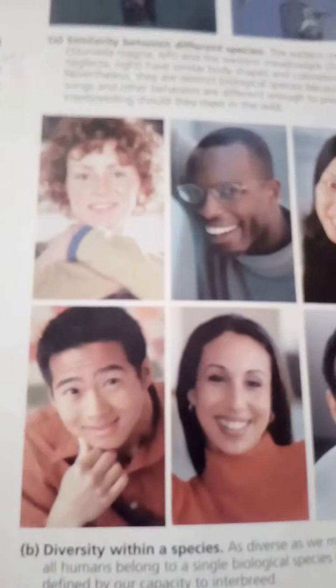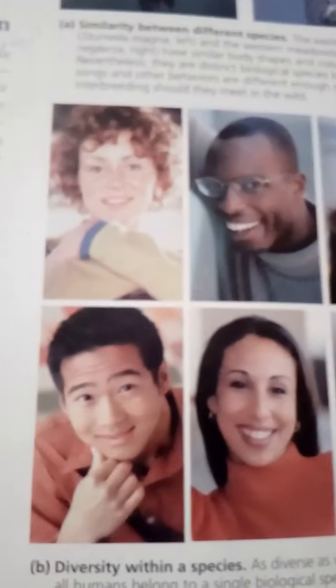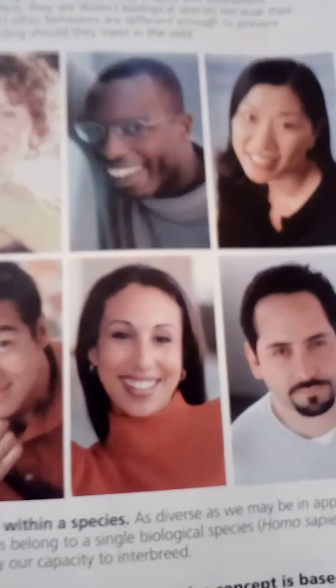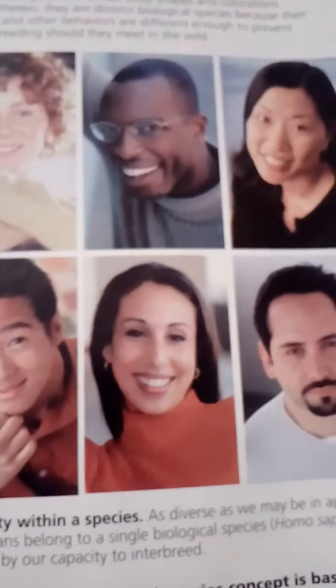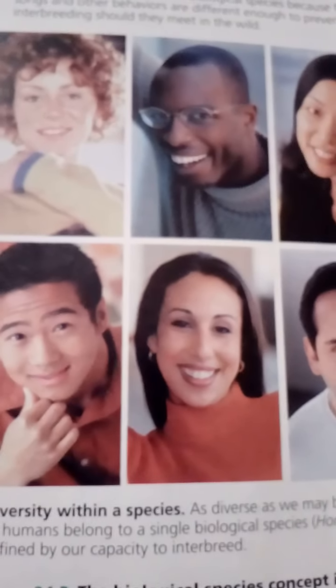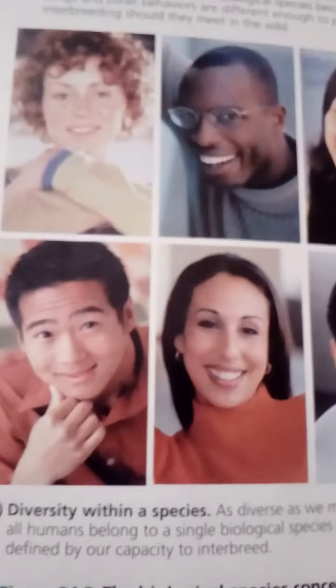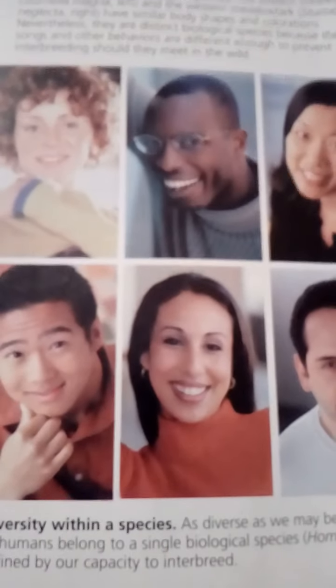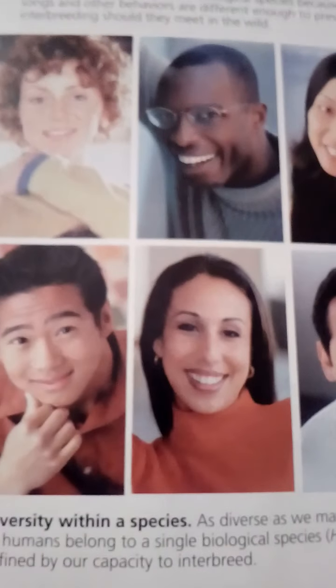The biological species concept — the primary definition of species used most frequently in this textbook — was proposed in 1942 by Ernst Mayr. This biological species concept defines species as a population or groups of populations whose members have the potential to interbreed in nature and produce viable, fertile offspring, but are unable to produce viable, fertile offspring with members of other populations.